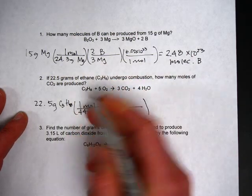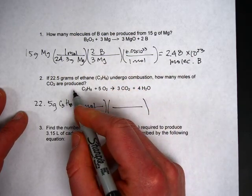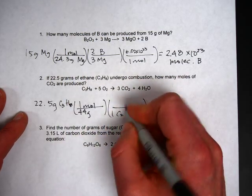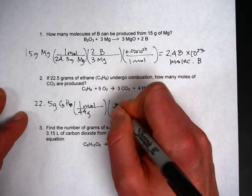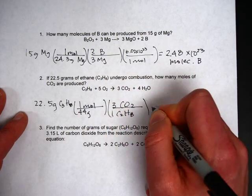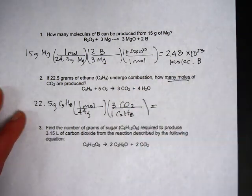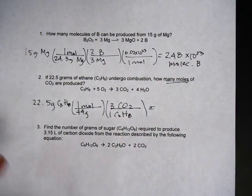And then use the mole ratio to go from ethane which is a 1 to carbon dioxide which is a 3. So one ethane will give you 3 CO2. And since this question says how many moles that means you stop right there. No need to convert your moles to grams or anything else.